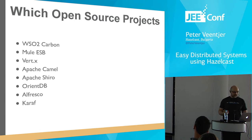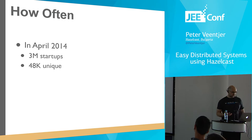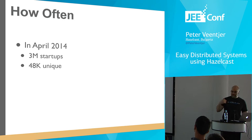How often is Hazelcast being used? In April 2014, we had 3 million startups from 48,000 unique IP addresses. We have a call-home mechanism where when a system starts up, it phones back to home, so we know how often it's being used. We don't see everything, because it could be disabled or it could be behind a firewall.